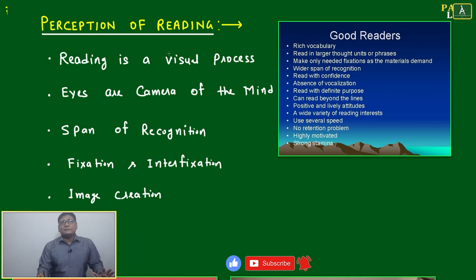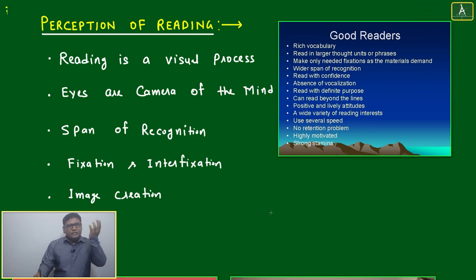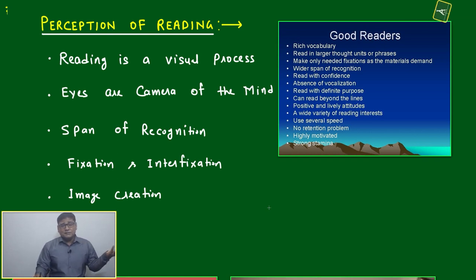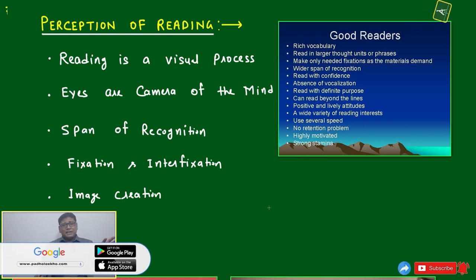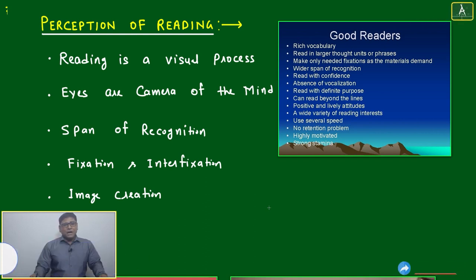Next is perception of reading. What is perception of reading? After visualization by the eye, how it communicates with your brain — that is called perception. The same thing shown to 10 people will produce 10 different responses depending on their perception. It is the same fact, same image, same situation, same scenario — but 10 people will take 10 different things from it.